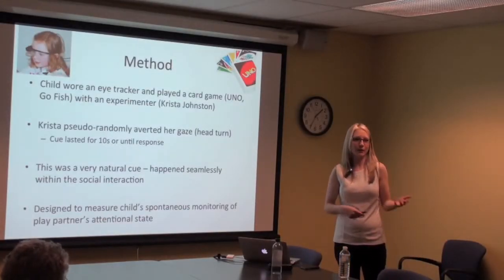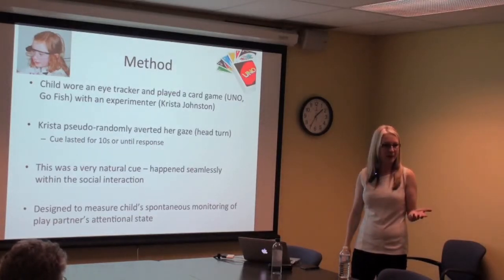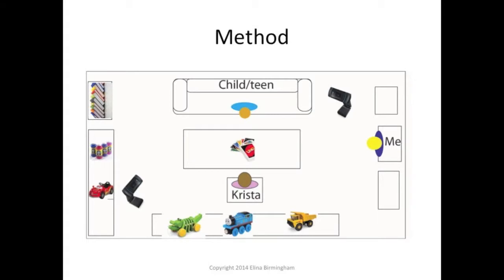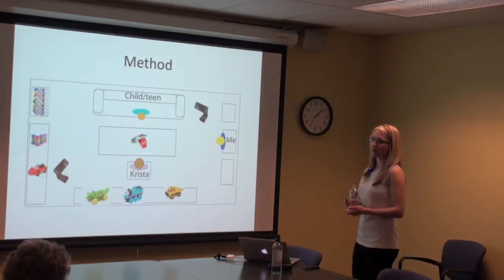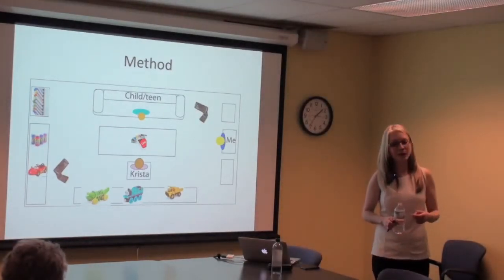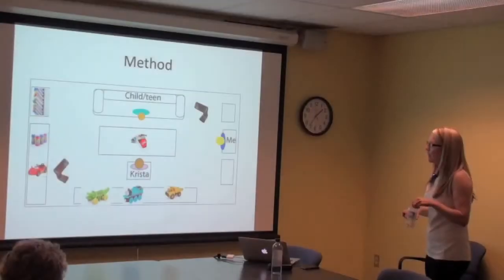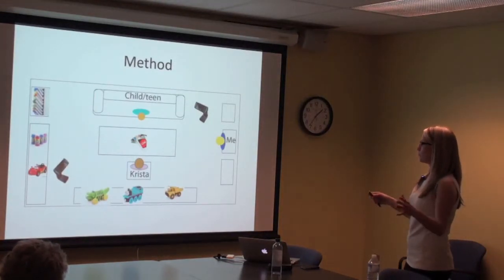We wanted to know whether children with ASD and typical kids spontaneously monitor where their play partner is paying attention — an important cue in real social situations. The room had a couch for the child or teen, a coffee table with the game, Krista facing them, interesting objects around the room, and me monitoring the eye tracker. Krista sometimes looked at me or at an object in the room — varied across trials. High-definition webcams recorded the room in addition to the eye tracker.